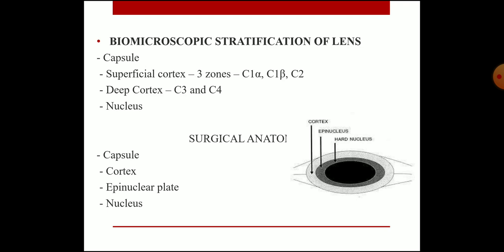The biomicroscopic stratification of the lens includes the capsule, superficial cortex with three zones — C1 alpha, C1 beta, and C2 — the deep cortex C3 and C4, and then the nucleus. The surgical anatomy of the lens is described as capsule, cortex, epinuclear plate, and the nucleus, as seen in the diagram.